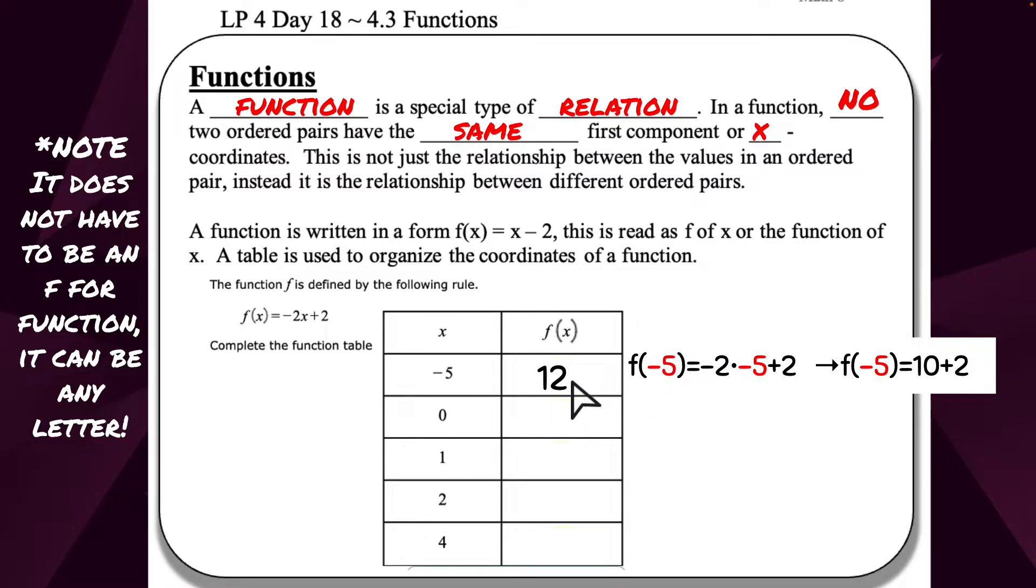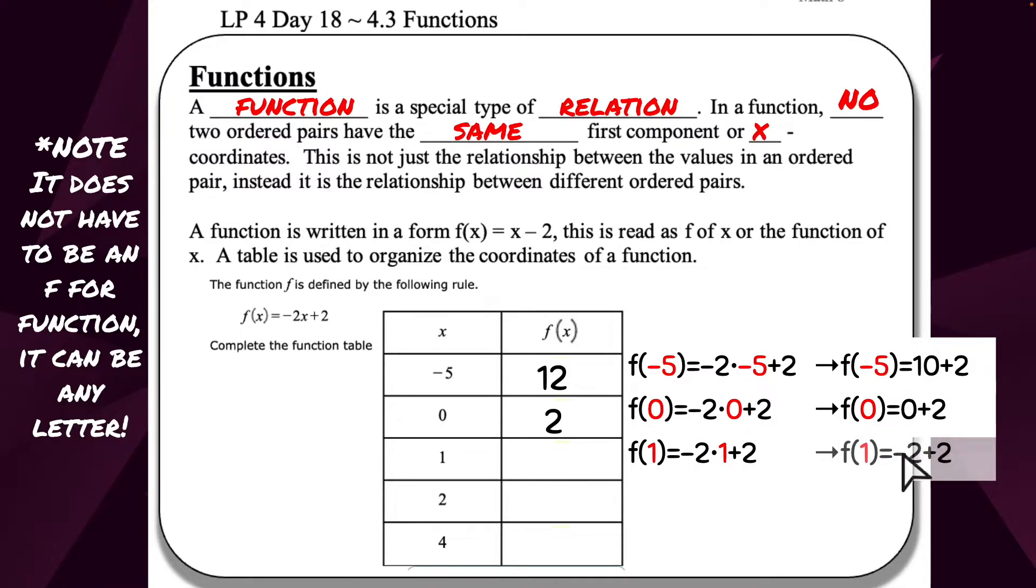Now we're going to do the same thing for 0. So f(0) equals negative 2 times 0 plus 2. Negative 2 times 0 is 0. 0 plus 2 is 2. Now we're going to do 1. Negative 2 times 1 plus 2. Negative 2 times 1 is negative 2. Negative 2 plus 2 is 0.